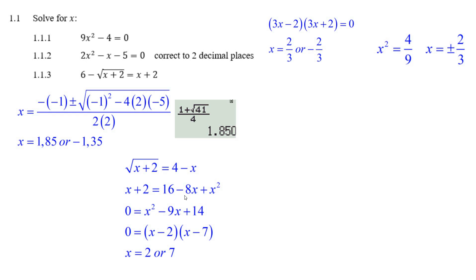Then you square both sides and do FOIL on this thing here. You're going to get 16. The outside and inside will give you a minus 8x. And then plus x squared, take away x from minus 8x, you get minus 9x. Take away 2 from 16, you get 14.